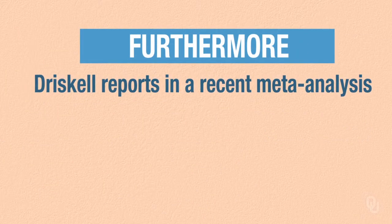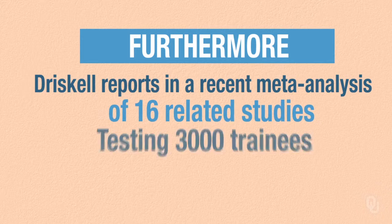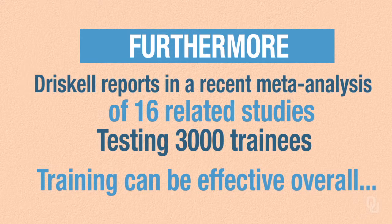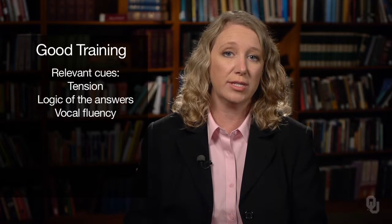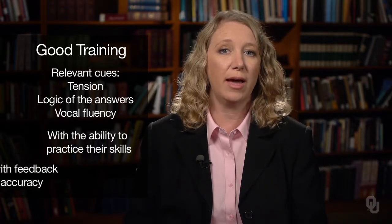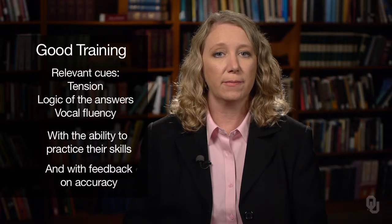Driscoll reports in his recent meta-analysis of 16 studies testing the effects of training on nearly 3,000 trainees that training can have a moderate effect overall, but that the type of training can affect the results. Training that combines information about the correct relevant cues — such as tension, the logic of the answers, and vocal fluency — with an ability to practice their skills and with feedback on accuracy was the most effective. Driscoll's meta-analysis also found that training was more effective for naive trainees than people with training experience in deception detection. In fact, at least one study suggests that training may make police officers worse after the training than before. Driscoll speculates that ineffective stereotypes have been taught to professionals and make it more difficult to undo their misconceptions than the vague misperceptions of laypeople.